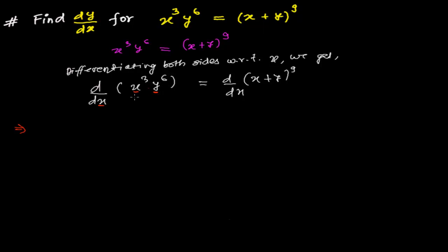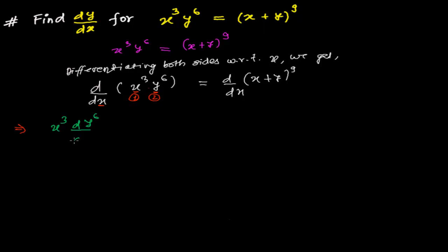Let me suppose this is my first function and this is my second function. In that case, as we used to do, we write first function times derivative of second function, plus second function times derivative of first function.